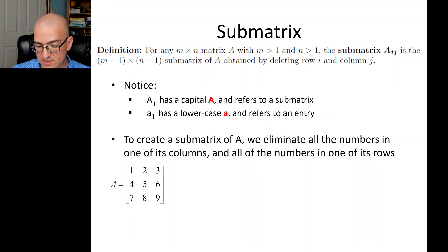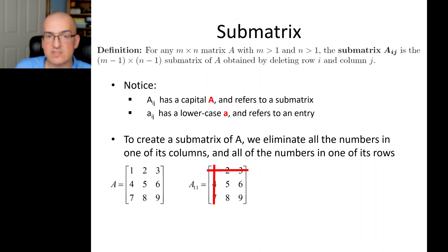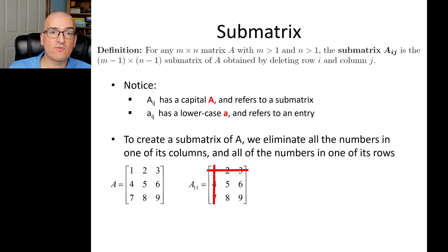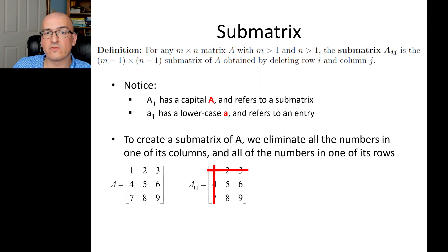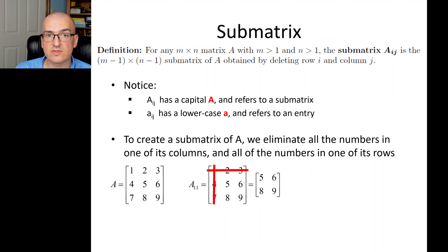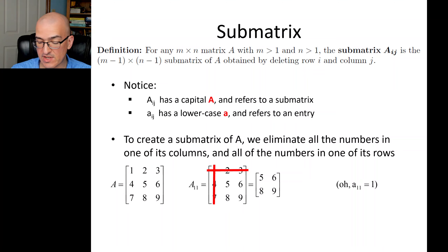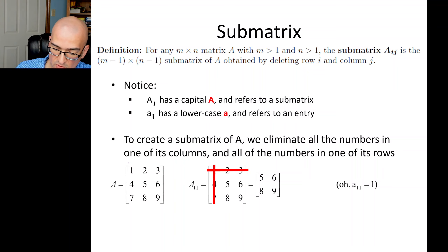Here's a nice 3x3 matrix, and we'll construct a few submatrices. The submatrix A11 is constructed by deleting row 1 and column 1 — indicated by crossing them out in red — and then putting the surviving numbers 5, 6, 8, 9 into a new 2x2 matrix. We'd also talk about the entry little a11, the number at the top left, row 1 column 1, which in this case is 1.